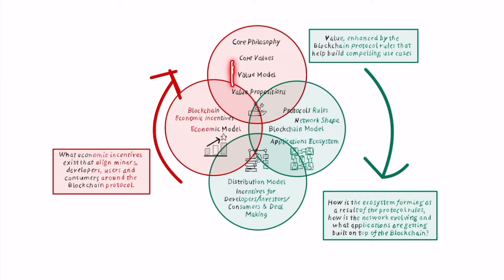That's why when you look at a blockchain-based project you want to examine the value model: what are the core values, the core philosophy, and the core value propositions that make up that blockchain protocol. For instance, a key difference between Bitcoin and Ethereum is that they have two different philosophies — Bitcoin is more focused on the financial side, while Ethereum is more like a platform business, so they attract completely different kinds of people.